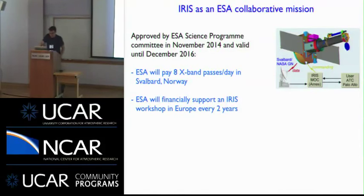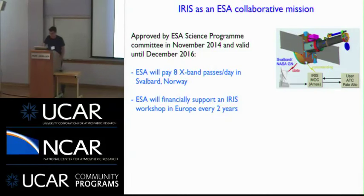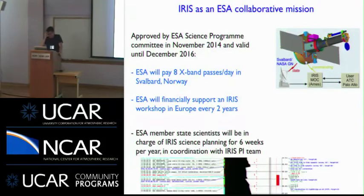In the first two years of the mission, the Norwegian Space Center paid for X-band downlinks, which is the bulk of our daily downlink volume, and that's now been transitioned to ESA — the European Space Agency. They will continue to pay for X-band passes until the end of next year. They will also financially support an IRIS workshop in Europe every two years, and we will have some ESA member state scientists doing IRIS science planning for about six weeks per year.